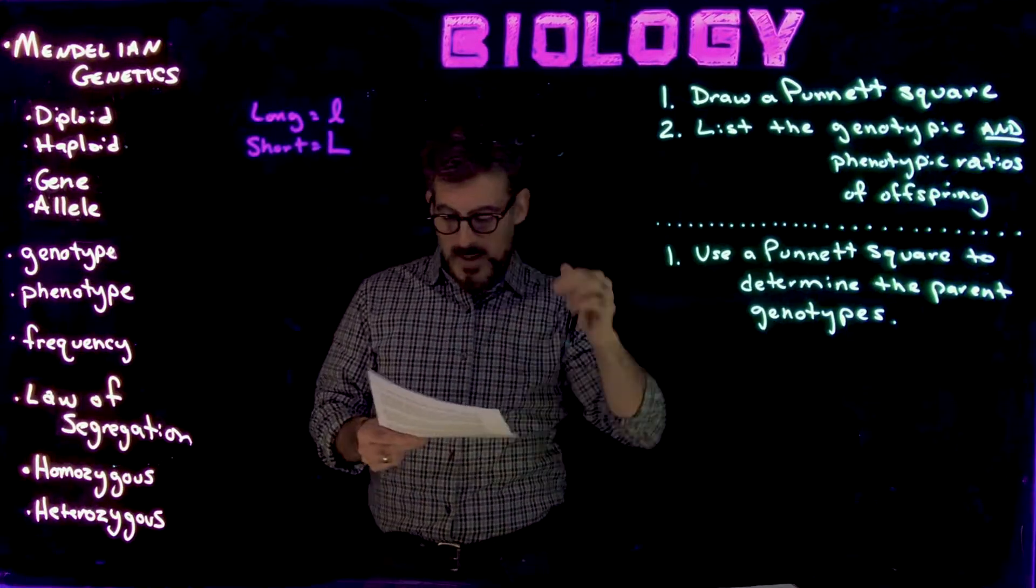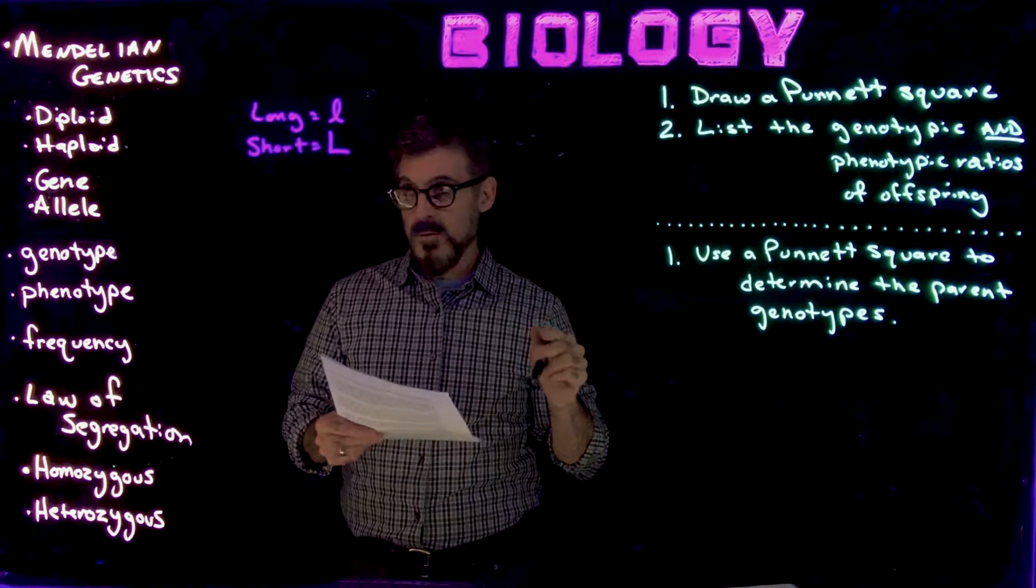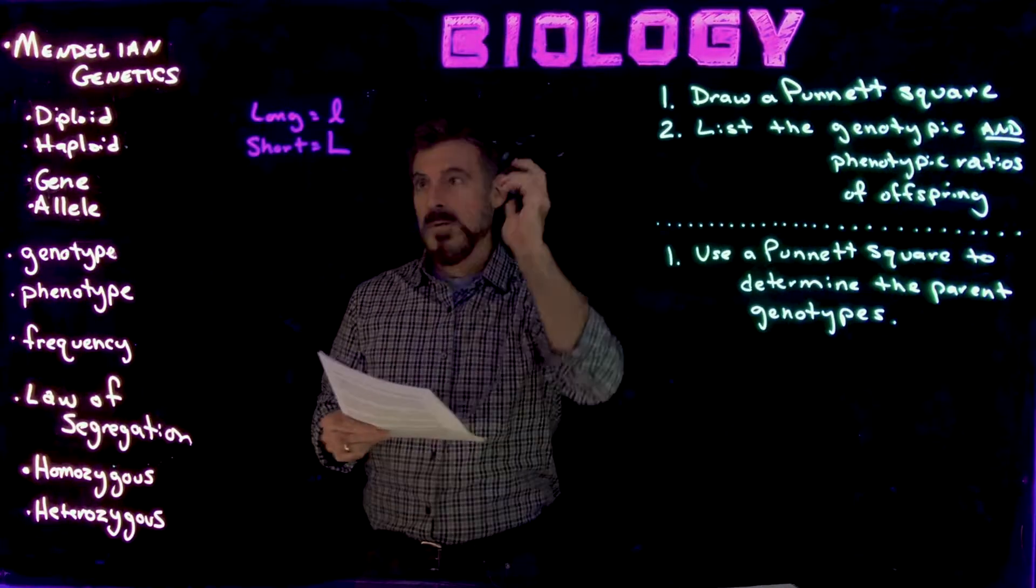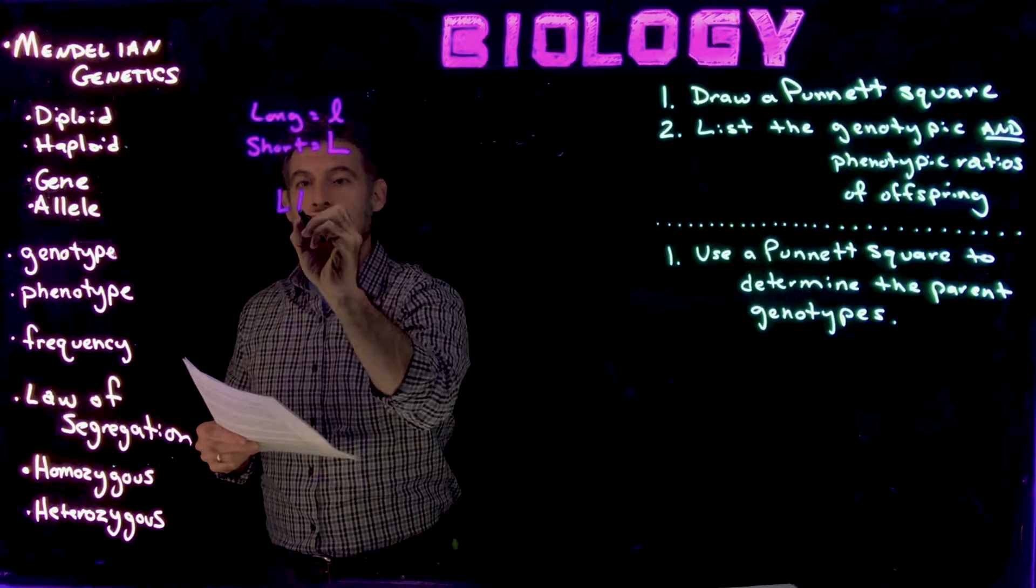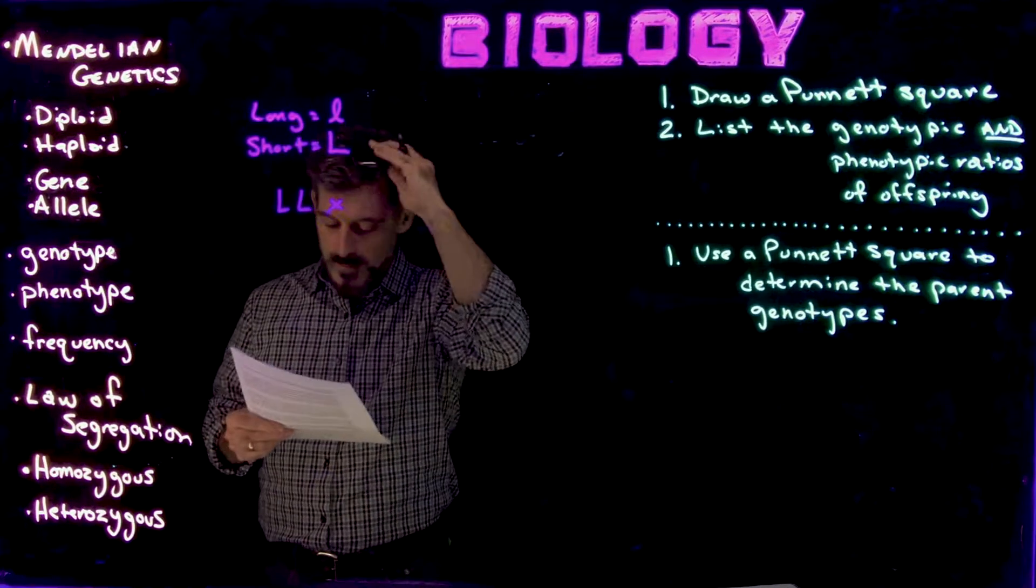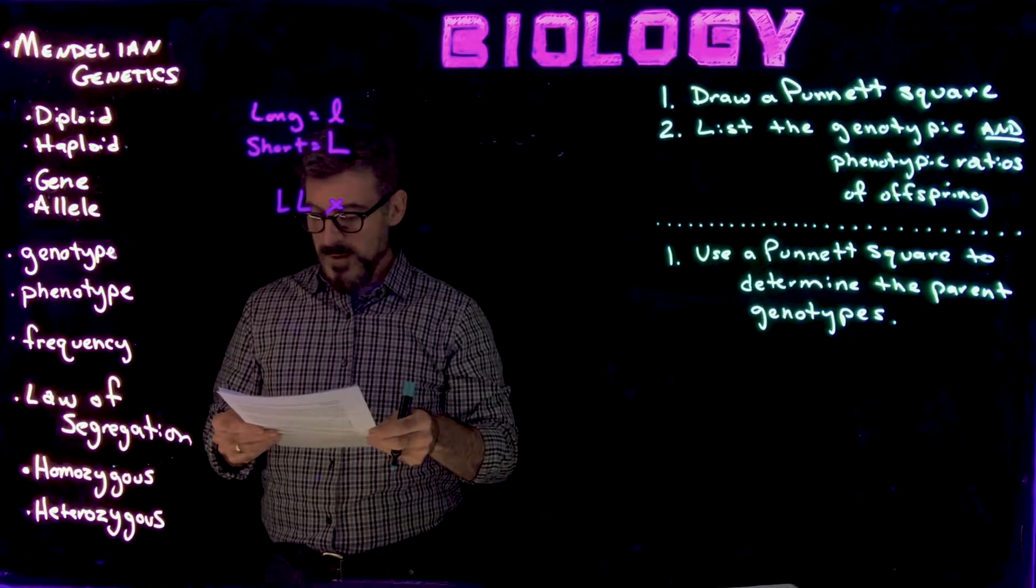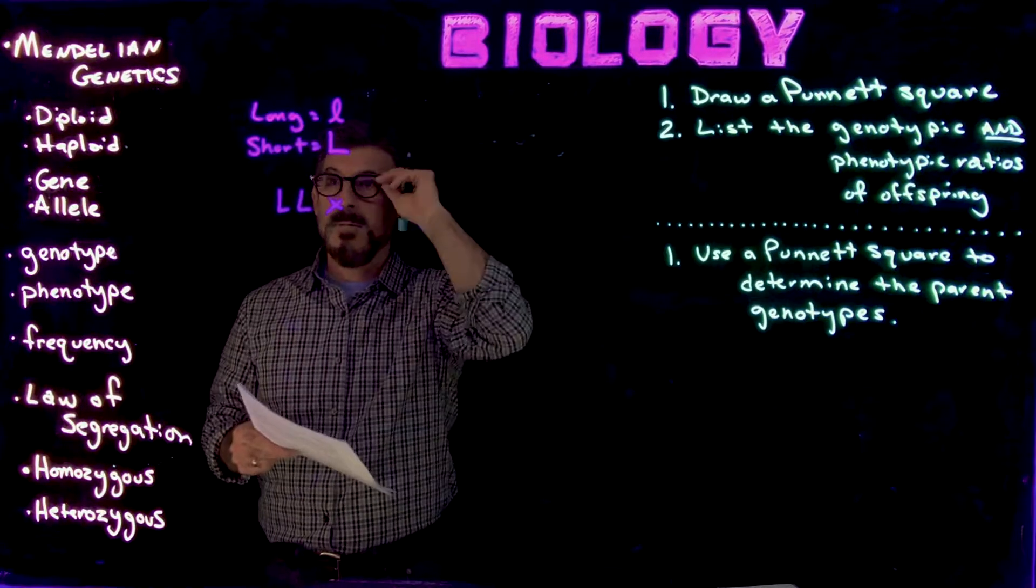So in this problem, then we have a true breeding short hair. So true breeding, remember that from our past example, is going to be mated with a long-haired female.